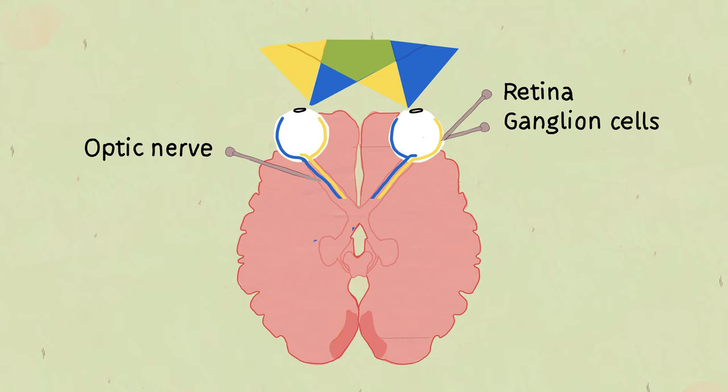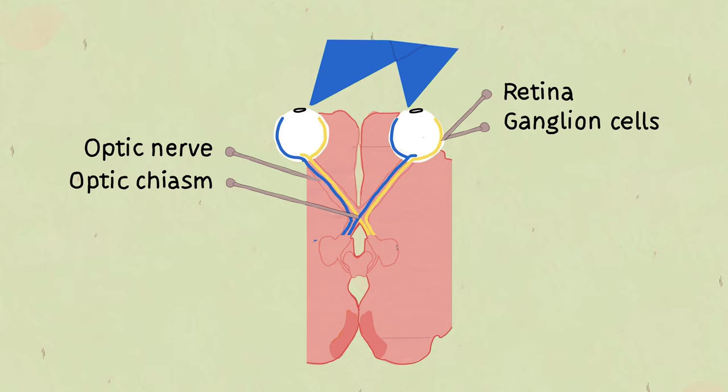The optic nerve sends the visual information through the optic chiasm where the nerves cross, causing the left side of the brain to process the right side of the visual field, and the right side of the brain to process the left side of the visual field.